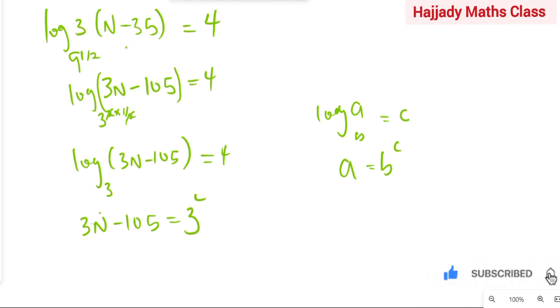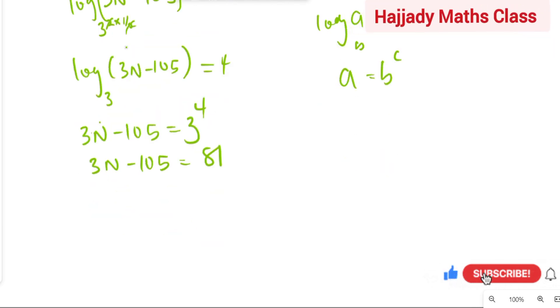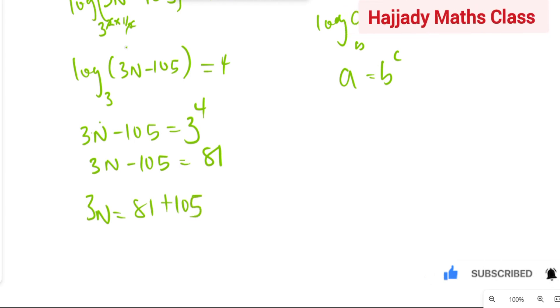So, we have 3N minus 105 equals 3 raised to power 4, which is the same as 81. So, from here, we have that 3N equals 81 plus 105. So, we have 3N to be equals to 186.